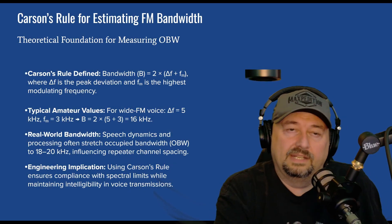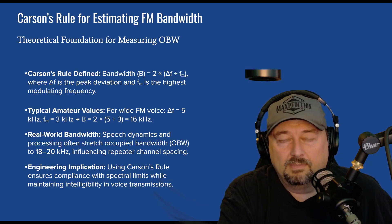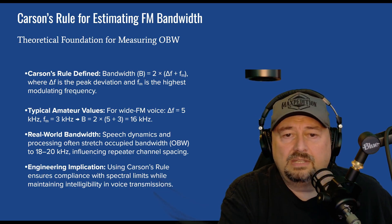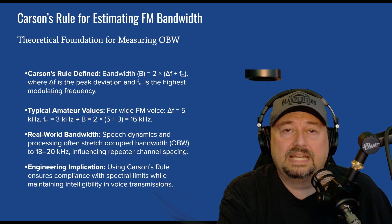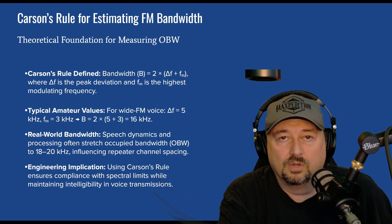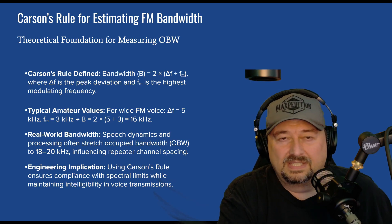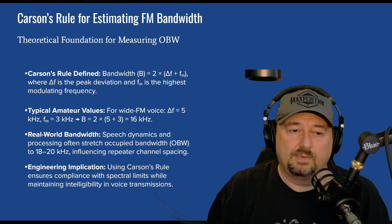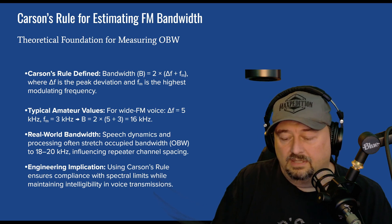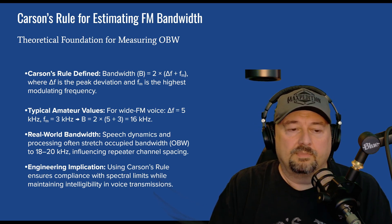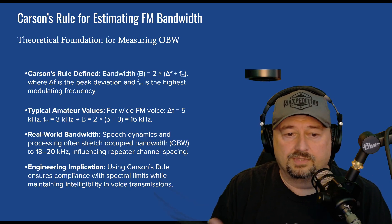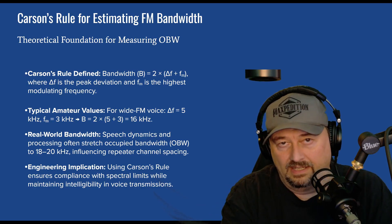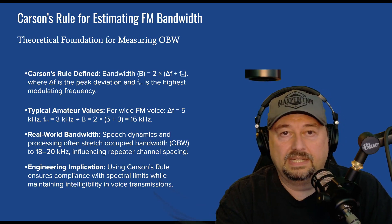There's a guy — old man Carson — who came up with a rule. Looking at the formula: B (bandwidth) equals two times our frequency deviation plus any other maximum frequency we're attaching to that. In this case we're looking at 16 kilohertz wide for our measurement. In the real world you want to account for speech dynamics, so we say around 18 to 20 kilohertz, but closer to 18. Carson's rule ensures compliance with spectral limits while maintaining intelligibility in voice transmissions — when you build radios, you want to adhere to it for both transmitting and receiving.